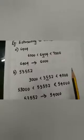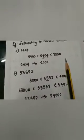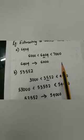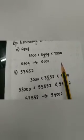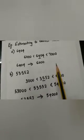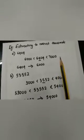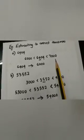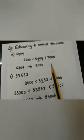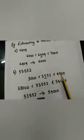So to summarize: for rounding off to nearest tens, we consider the digit in the units place. For rounding off to the nearest hundreds, we consider the digit in the tens place. For rounding off to nearest thousands, we consider the digit in the hundreds place, and so on.